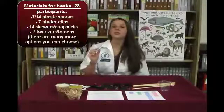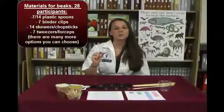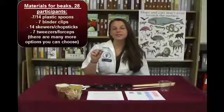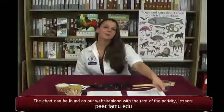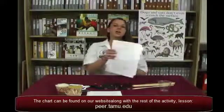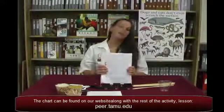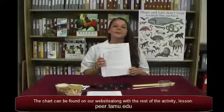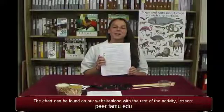We also chose forceps, or tweezers, so you'll need seven sets. After each child has chosen their beak design, you may want to explain to them what each beak represents. For this purpose, we've included a chart in the lesson plan explaining each kind of beak.